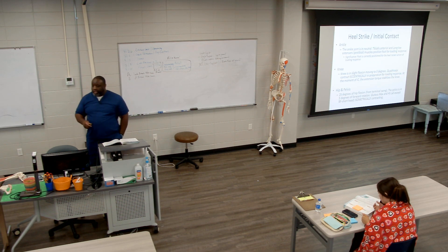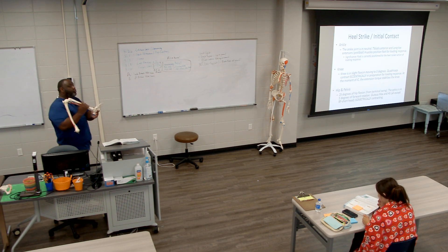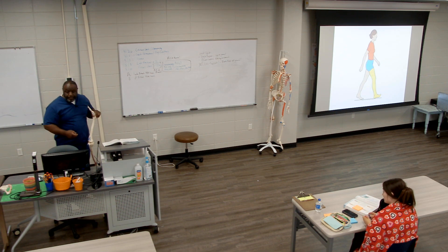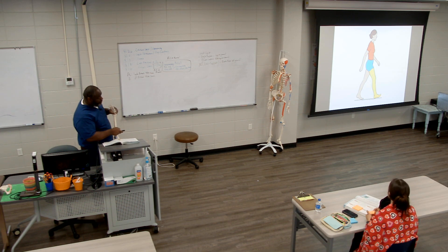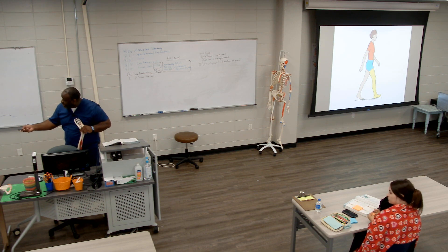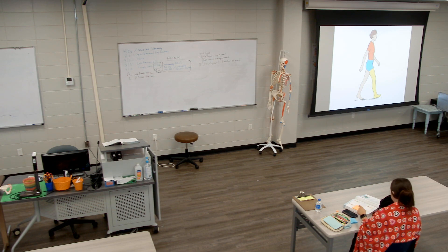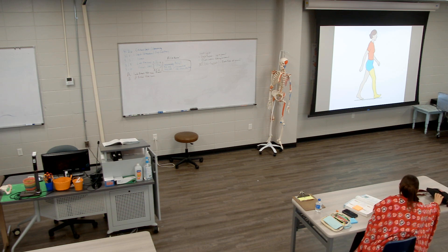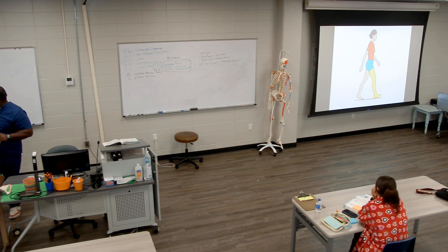At the ankle, we said the ankle would be in neutral. Remember, we said the ankle is in neutral, even though when you look at the picture, this looks like the foot is in dorsiflexion. Can we agree? From this view, this looks like dorsiflexion. And that would almost be 100% correct, except for the position of the tibia and the fibula.